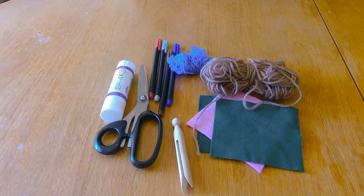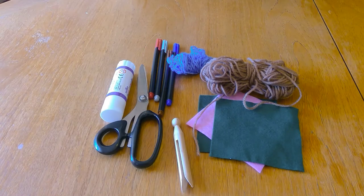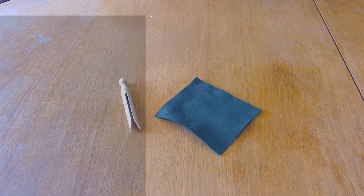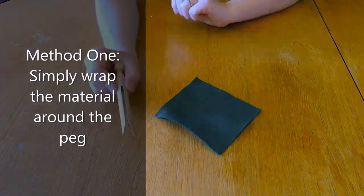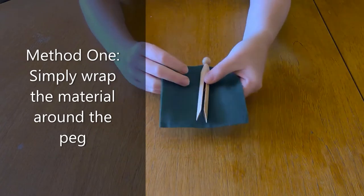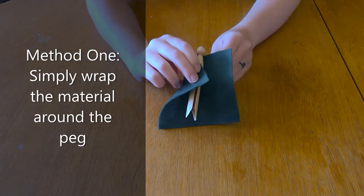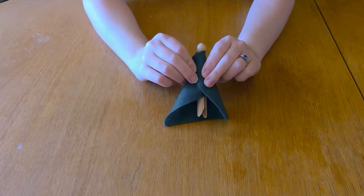There's no right way to make your peg doll so I'm just going to show you a couple of methods you could use to make some clothes. The first one is to simply take a small square of material and wrap it around the peg. You can then use some glue or tape to hold it in place.